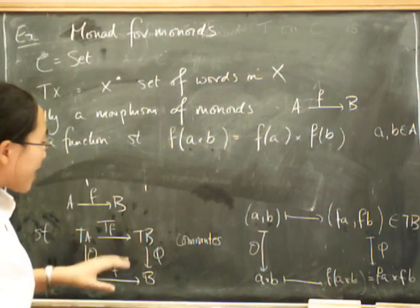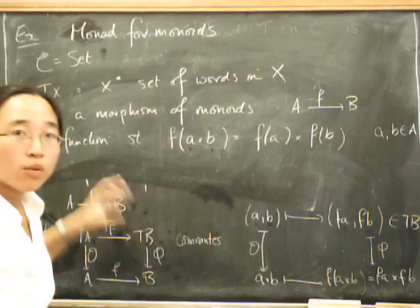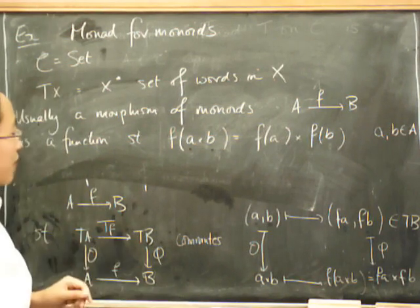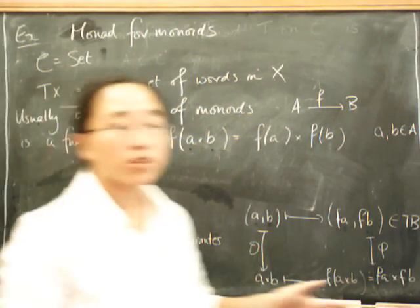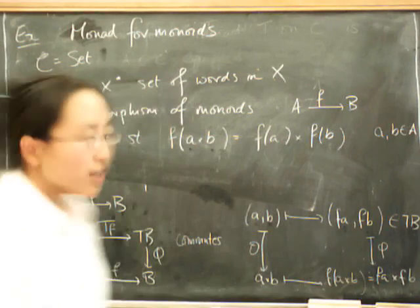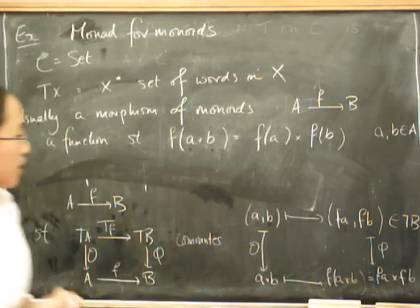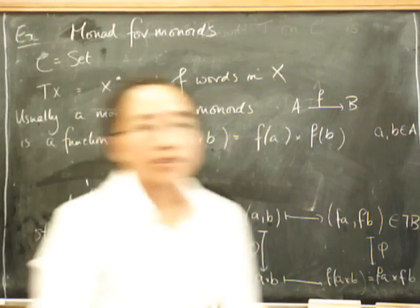So F of A and F of B are both elements of B. So this is now a perfectly good word in B, which makes it an element of T of B. And when we do the action of B, what we get is we multiply those two things together. So we get F of A times F of B. And the commutativity of this diagram says that those two things have to be equal. So this diagram is exactly saying that the morphism has to interact properly with the algebra structure that we have there.